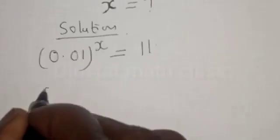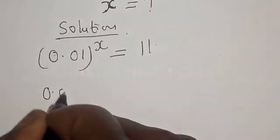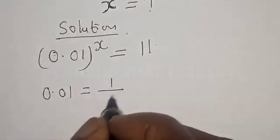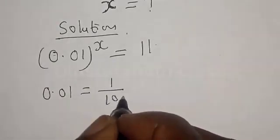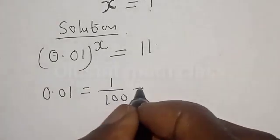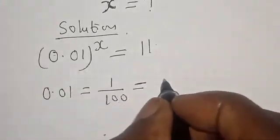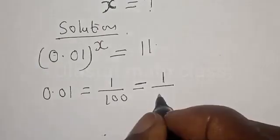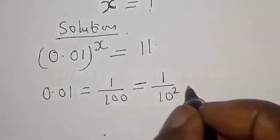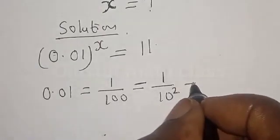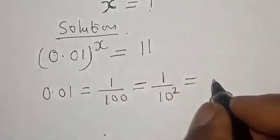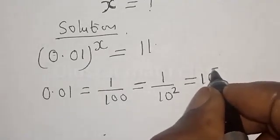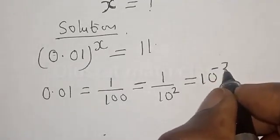Remember, 0.01 is simply 1 over 100, which is equal to 1 divided by 10 squared, which is equal to 10 raised to the power of minus 2.